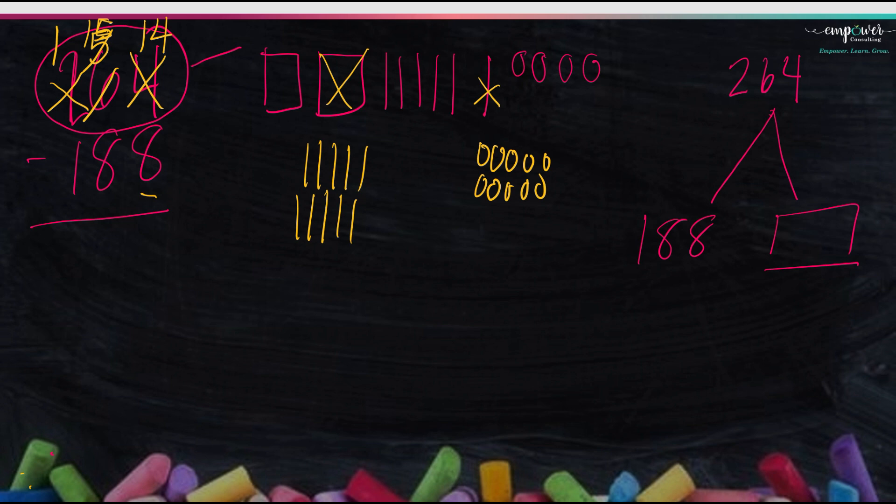So if I have 15 tens, now I can do all my subtraction. So 14 minus 8, I can take away my 8, 5, 6, 7, 8, 1, 2, 3, 4, 5, 6. I have 6 left. I have 15 minus 8 tens. I can take away my 8, 5, 6, 7, 8.